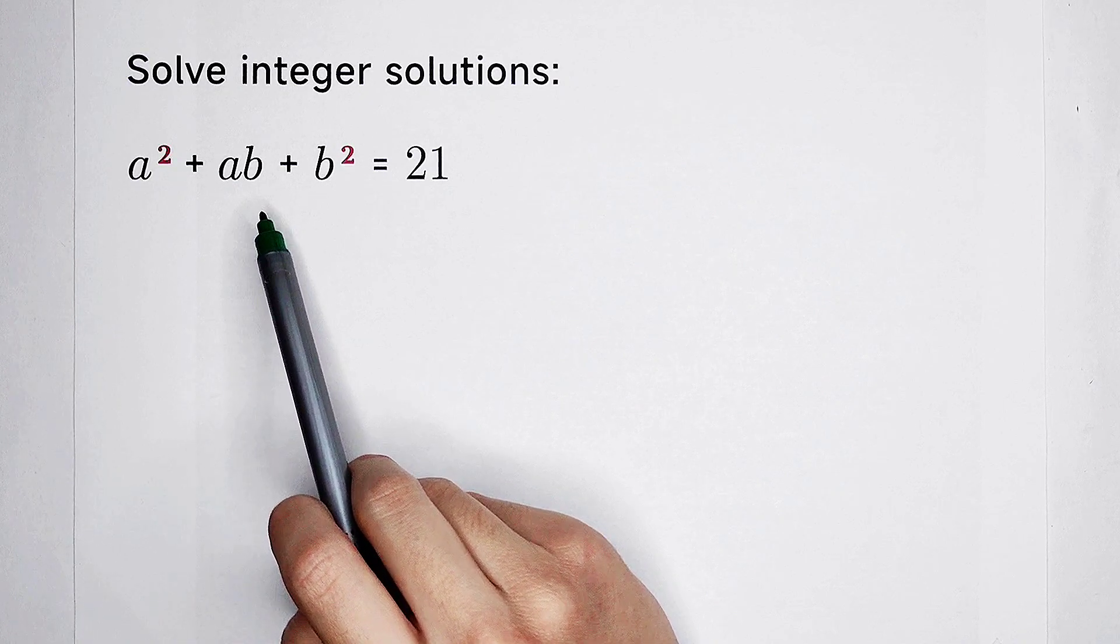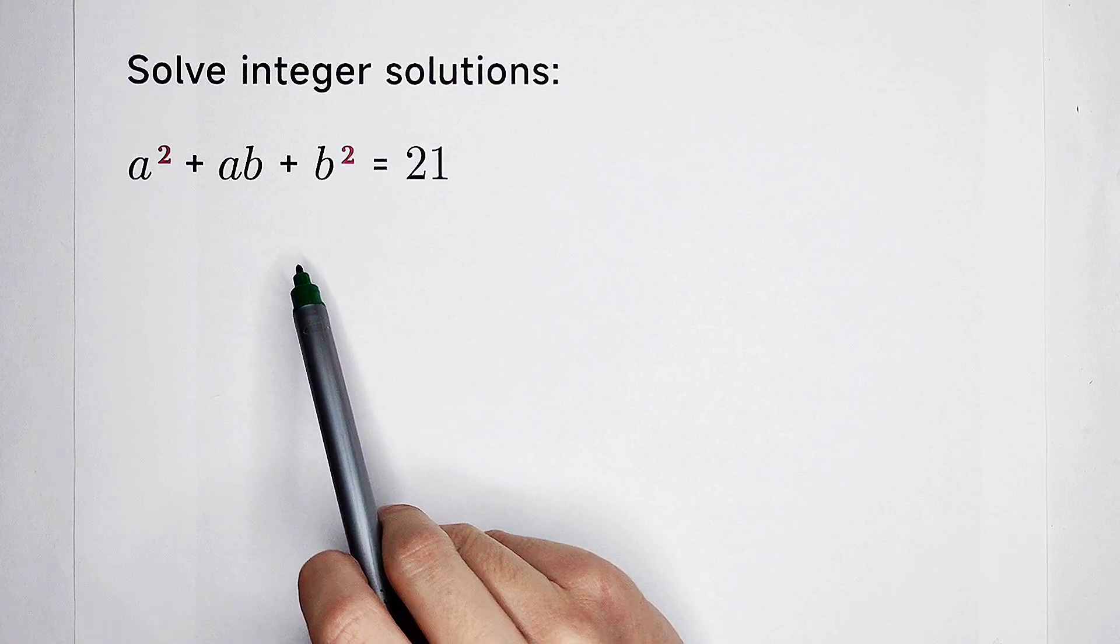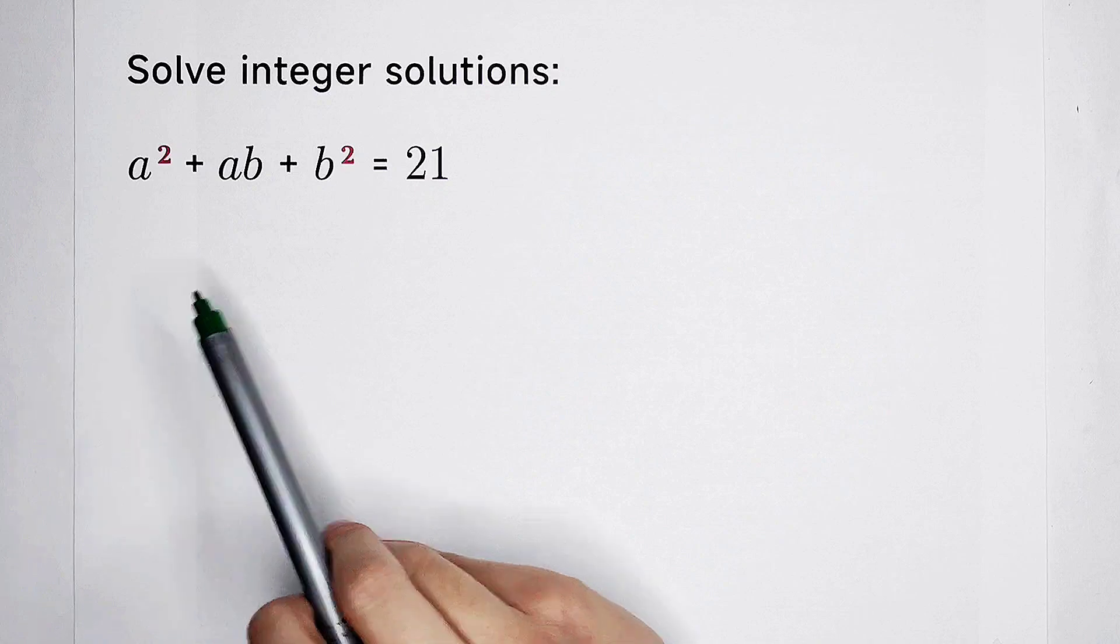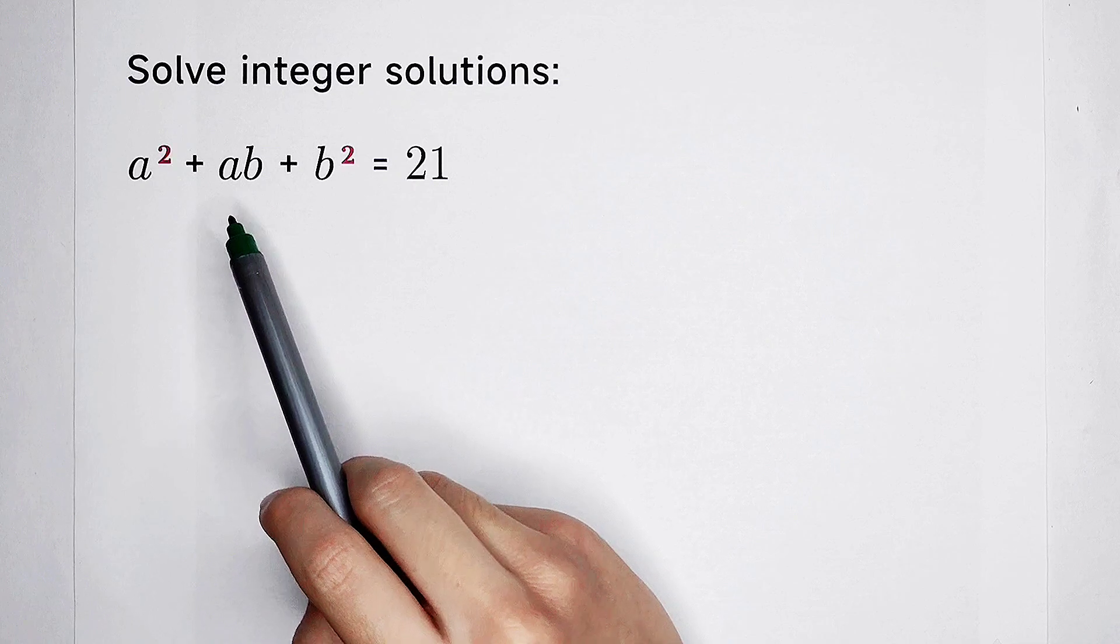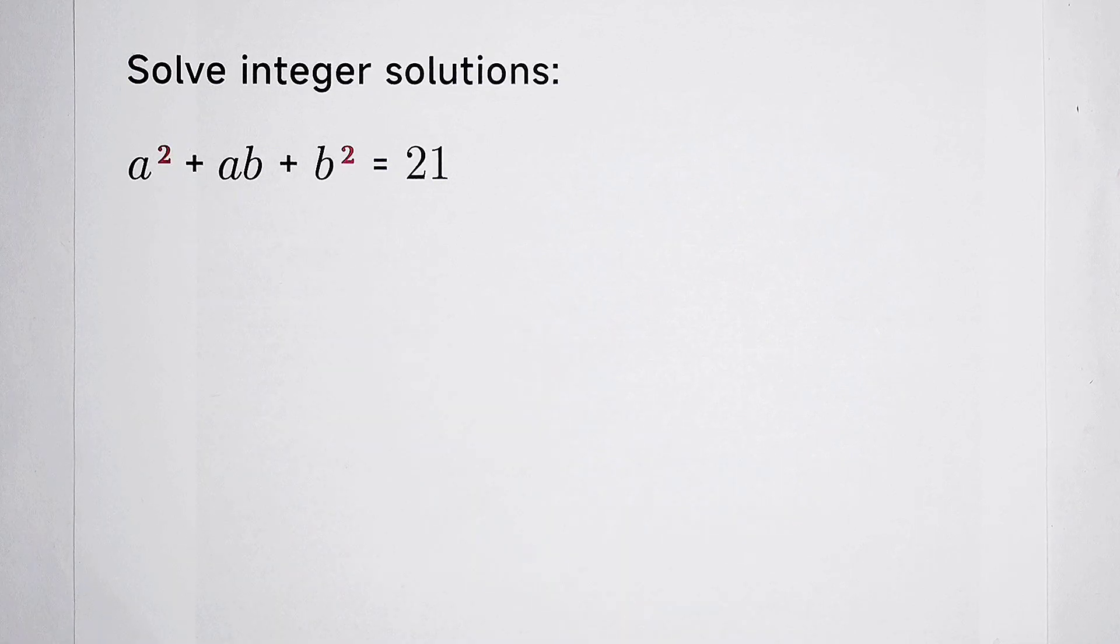Then it can be written as a plus b all squared. So the difficulty of this problem is only that the coefficient of ab is 1, not 2. So how to solve it?